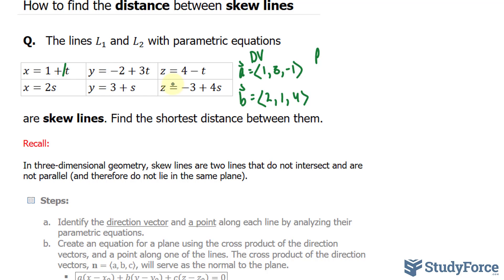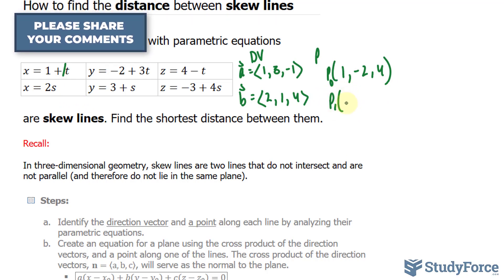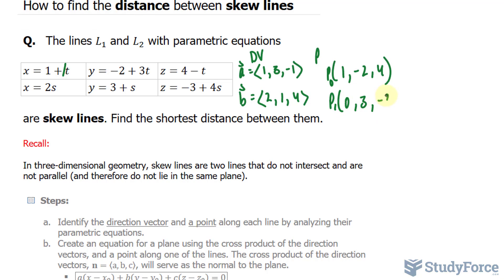We can set t as equal to 0, and that will give us a point. So if I set this equal to 0, that 1, and that 1, I'll end up with a point, let's call it point 0, at 1, negative 2, and 4. And similarly, if I set s equal to 0 here, I'll end up with a point at 0, 3, and negative 3. So that takes care of step A.